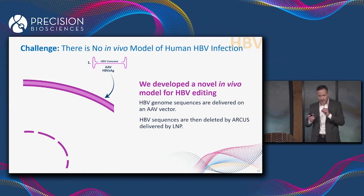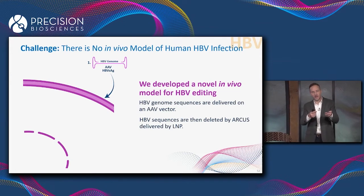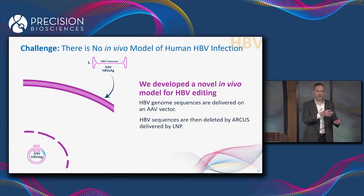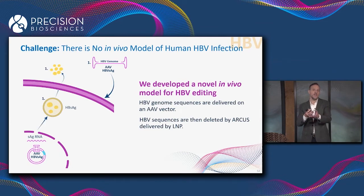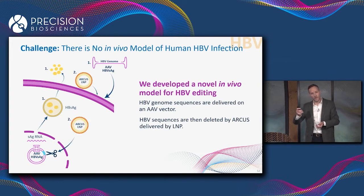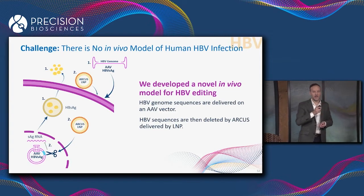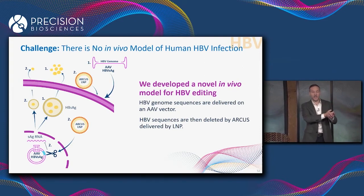What we did is we cloned the open reading frames from hepatitis B into an AAV vector. We can then introduce that AAV vector into an animal — either a mouse or a non-human primate. The vector goes to the nucleus and hangs out there as a circular piece of DNA. That circular genome produces S antigen mRNA, which then secretes S antigen protein into circulation. We can then come in with our Arcus lipid nanoparticle, which cuts the virus DNA, leading to a loss in production of S antigen mRNA and reductions in the amount of S antigen protein secreted into circulation.